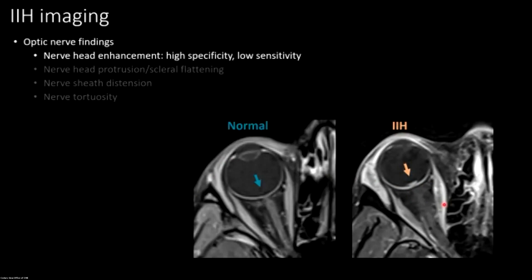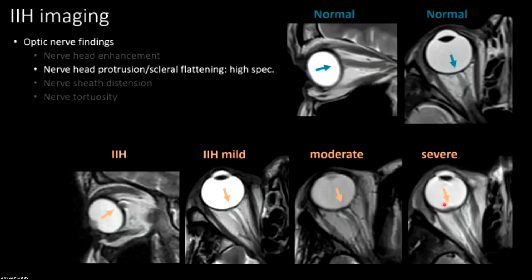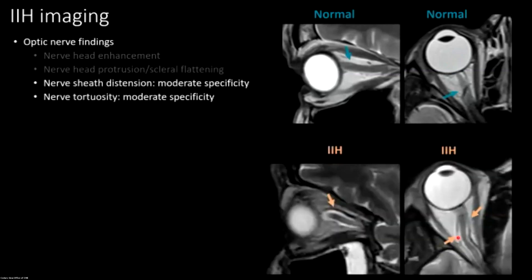Of the same degree of specificity — around 95% — is protrusion of the optic nerve head without enhancement, either because contrast wasn't given or it just didn't enhance. It's often helpful to look on the sagittal image; sometimes you see these findings much better there than on axial. Every MRI done for headache, I'm looking for this. Here's optic nerve head protrusion on sagittal and axial views — even just a little bit of flattening with a bunch of other findings pushes me toward suggesting IIH. The nerve sheath can also distend and become tortuous — you want a relatively straight nerve without excess CSF around it.